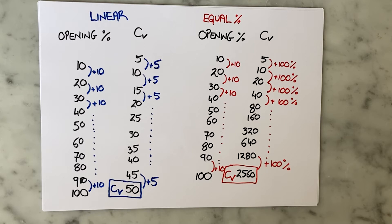This is the difference between a linear and an equal percentage valve characteristic. For a given step change in valve opening, a linear valve CV increases by the same amount, while an equal percentage valve CV increases by the same percentage. And that's where it gets its name.